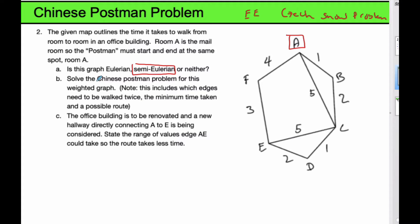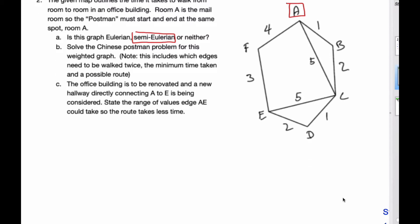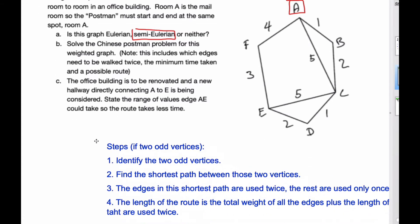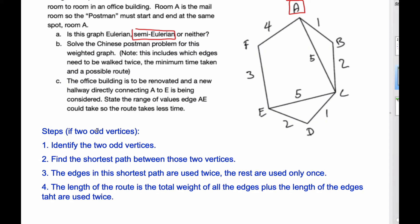In doing this we want to solve the Chinese Postman Problem for these weighted edges. Note we include the edges needed to be walked twice, the minimum time taken, and the possible routes taken. There are steps to doing this problem. The first one, this is if there are 2 odd vertices. If they're all even then it's simply you add up all the edges. But in this case the first thing we're going to do is identify the 2 odd vertices.